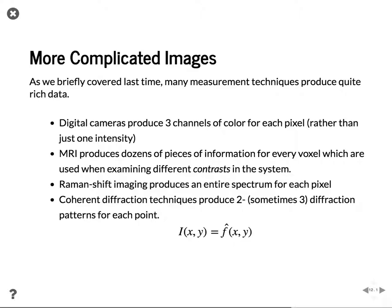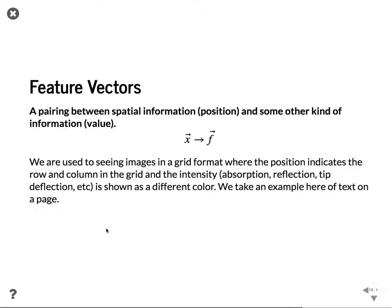Raman shift imaging produces an entire spectrum at each pixel. Diffraction imaging techniques can produce two or three diffraction patterns at each point, until you end up with a whole image or 3D image at each point inside your image. One of the easier ways for dealing with this is using the idea of a feature vector — a pairing between spatial information position and the value or depth in the image, which is kind of the original definition we had of an image.